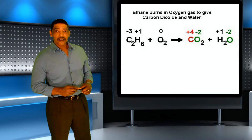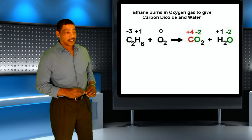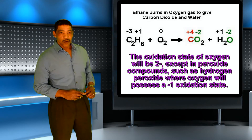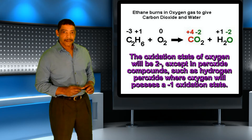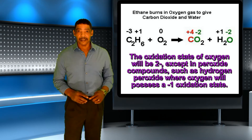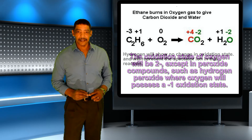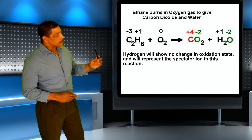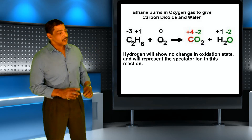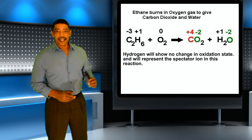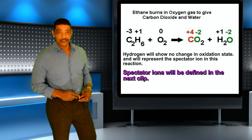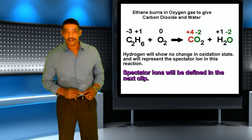On the product side, carbon in carbon dioxide will possess a plus four oxidation state, and oxygen will possess a negative two oxidation state. In the compound water, hydrogen will have a plus one and oxygen will possess a negative two oxidation state. During this reaction, carbon undergoes oxidation where the oxidation number increased from minus three to plus four, and oxygen undergoes reduction where the oxidation number decreased from zero to minus two.